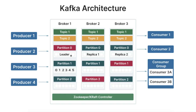We also have controllers. One broker in the cluster is elected as the controller, which manages administrative tasks like partition leadership election and broker membership. The controller is crucial for the high availability of the Kafka cluster. On the right, we have consumer groups, which are collections of consumers that act together to consume data from topics. Kafka distributes partitions among consumers in a consumer group, ensuring that each partition is consumed by only one consumer at a time. However, the same partition can be consumed by multiple consumers across different consumer groups.